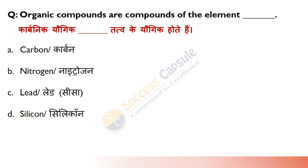Organic compounds are compounds of which element? Answer is A — Carbon. Organic compounds are any class of chemical compounds in which one or more carbon atoms are covalently bound to atoms of other elements, most commonly hydrogen, oxygen or nitrogen.